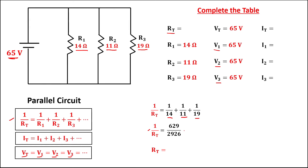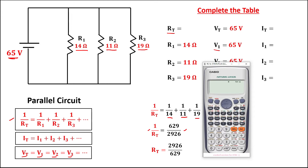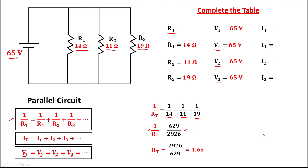we take the inverse, so this becomes 2,926 over 629. And to simplify, 2,926 divided by 629 equals 4.65. So the total resistance is 4.65 ohms.